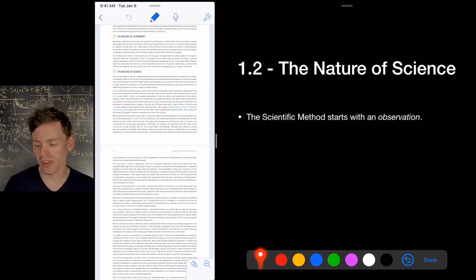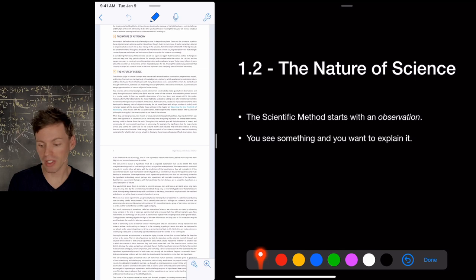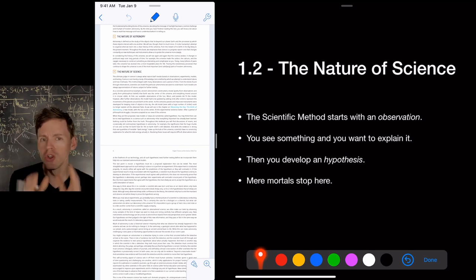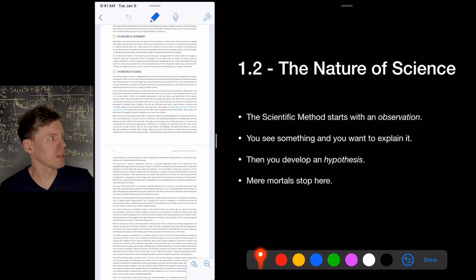The scientific method starts with an observation. You see something, you want to explain it. Okay, then you develop a hypothesis to try to explain the observation that you see. Usually people stop here. For example, lightning strikes. Oh, that scared me. I don't want that to happen. What was the cause? My room is messy. Oh, that's my hypothesis. My room is a mess, so that's why lightning struck. If I keep my room clean, aha, then lightning won't strike. So that's the next step.